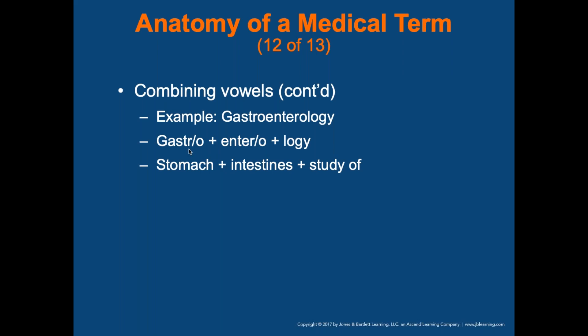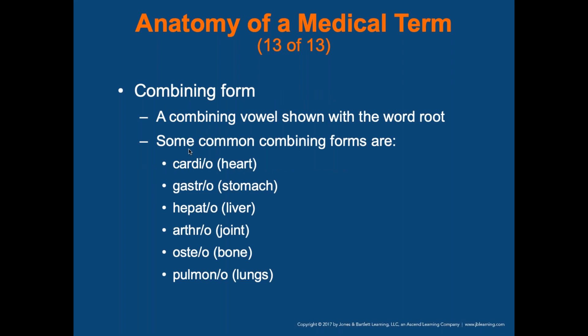Like a cardiologist is a specialist in cardiology — the study of the cardiovascular system. Some common combining forms are: 'cardio' for heart, 'gastro' for stomach, 'hepato' for liver, 'arthro' for joint, 'osteo' for bone, and 'pulmono' or 'pulmon' for lungs.